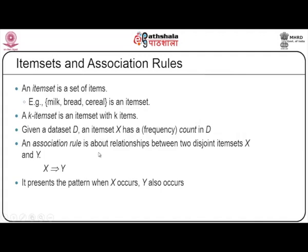An association rule is about relationships between two disjoint item sets X and Y, where X and Y must be completely distinct item sets. The rule presents a pattern: when X occurs, Y also occurs. So when we write an association rule in the format X implies Y, it means when X occurs, Y will also occur — that is the common implication.